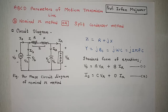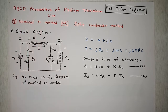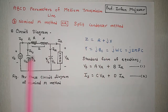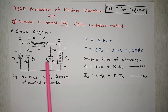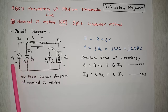Hello everybody. In this session, we will derive the ABCD parameters of a medium transmission line using the nominal pi method. The nominal pi method is also known as the split condenser method because capacitance is divided in half — half of the capacitance is situated at the receiving end and half is situated at the sending end.